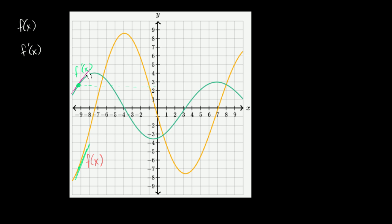Actually, let me erase this, just so we don't look like we're trying to take the slope of the tangent line of the derivative. So we see the slope of the tangent line right over here looks like about 2½, and the value of this function up here looks like it's about 2½. So so far, this green function looks like a pretty good candidate for the derivative of this yellow function.